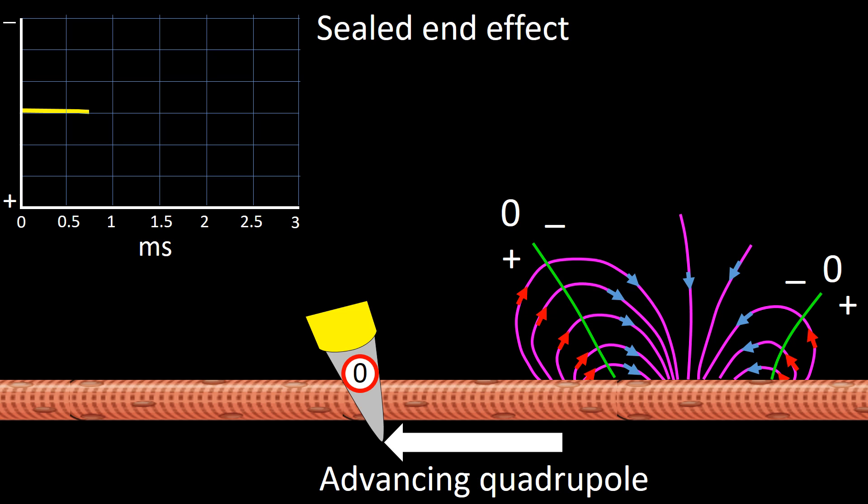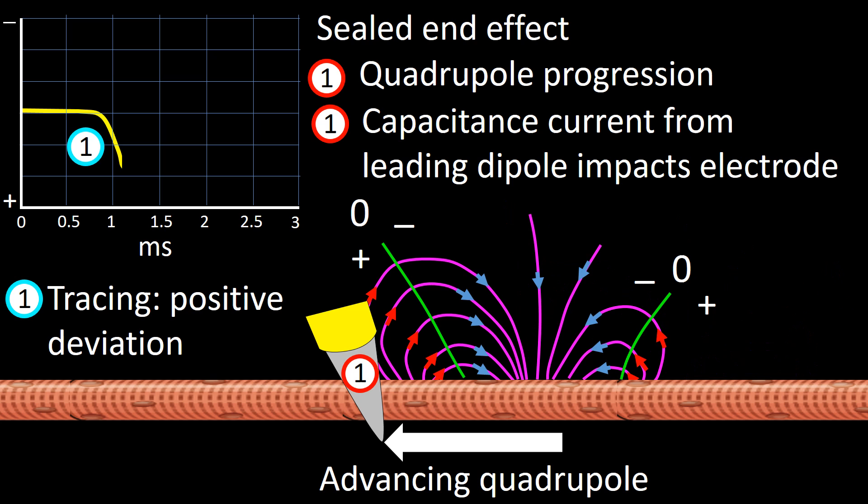At stage 0, the quadrupole is too far to impact the electrode, and the tracing is running at baseline. At stage 1, the quadrupole advances, and a positive deviation occurs due to the capacitance currents of the leading dipole.